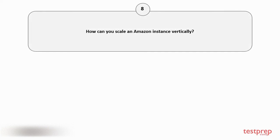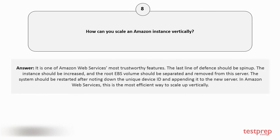Question number 8: How can you scale an Amazon instance vertically? It is one of Amazon Web Services' most trustworthy features. The last line of defense should be spin-up. The instance should be increased, and the root EBS volume should be separated and removed from this server. The system should be restarted after noting down the unique device ID and appending it to the new server. This is the most efficient way to scale up vertically in Amazon Web Services.